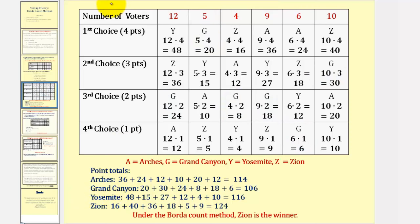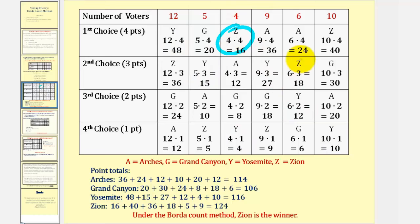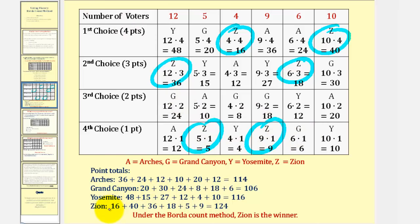Next, for Yosemite, we have a Y here in the first row. Second row, we have a Y here and here. Third row, we have a Y here. And the fourth row, we have a Y here and here. So Yosemite receives forty-eight plus fifteen plus twenty-seven plus twelve plus four plus ten points, or one hundred sixteen points. Finally, Zion is here in the first row and here. Second row, we have a Z here and here. There are no Z's in the third row, but the fourth row, we have a Z here and here. So Zion receives sixteen plus forty plus thirty-six plus eighteen plus five plus nine points, which is one hundred twenty-four points. Since Zion has the most points, under the Borda Count method, Zion is the winner.